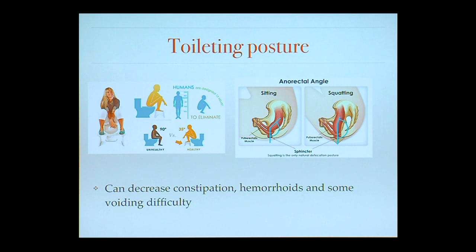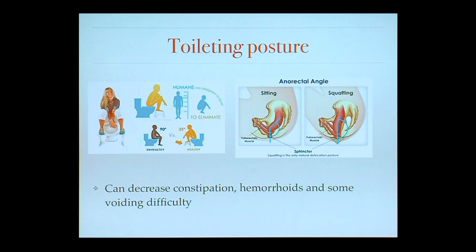Another piece is toileting posture. In a seated posture on a Western toilet, the puborectalis muscle acts like a sling and creates a choke hold on the bowel. In the squatting posture, this sling relaxes, the inner rectal angle is changed, and voiding is easier. A device called the squatty potty helps you come into this squatting position on a Western toilet, changing the inner rectal angle to help with constipation, hemorrhoids, and voiding difficulty.